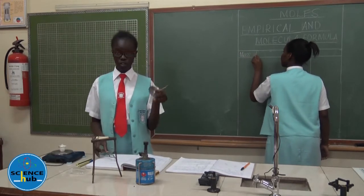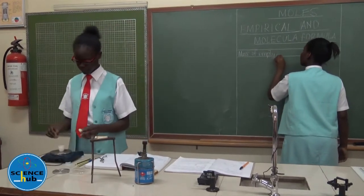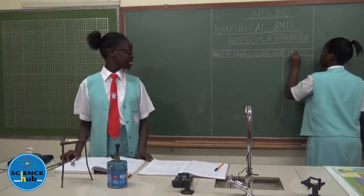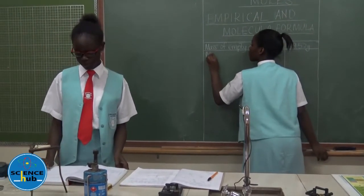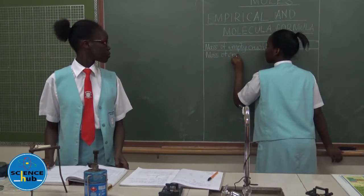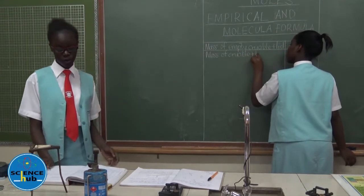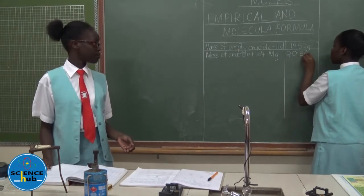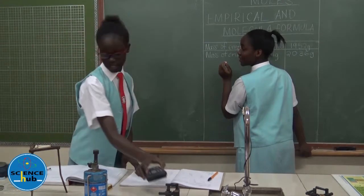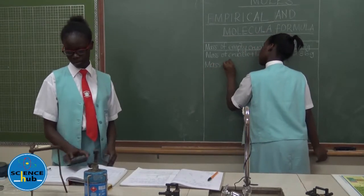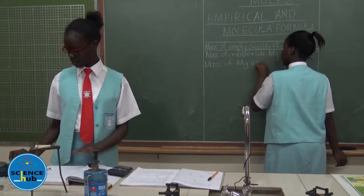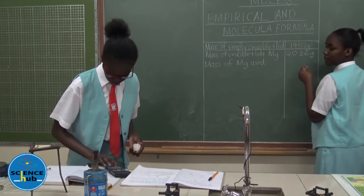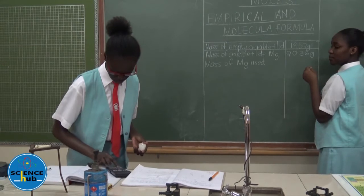We will also record the mass of the magnesium ribbon in the crucible and the lid. The reading is 20.36 grams — that is the mass of the crucible, the lid, and the magnesium ribbon. From there, we can get the mass of the magnesium ribbon produced. That will be 20.36 grams subtracted from the mass of the empty crucible and the lid, giving 0.84 grams.